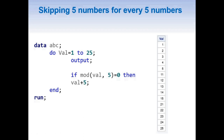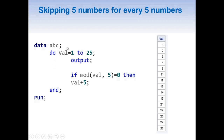Since the DO loop increments by 1, val becomes 11 and it outputs. As 11 is not exactly divisible by 5 to give remainder 0, it goes back to the loop: 12 outputs, 13 outputs, 14 outputs — none of them from 11 to 14 match the condition. Then 15 outputs, and since 15 is exactly divisible by 5, it adds 5 more, making val 20, and then it tries to loop again.